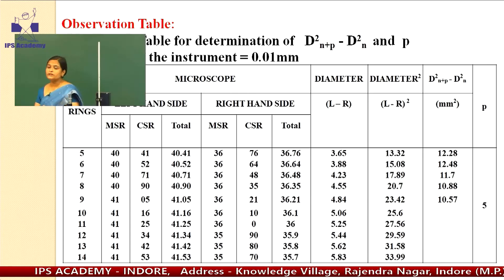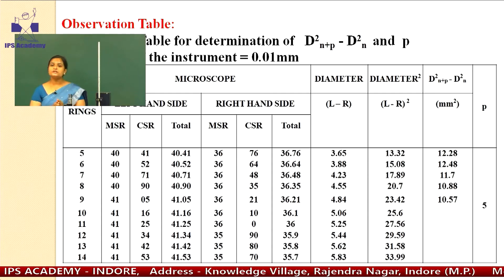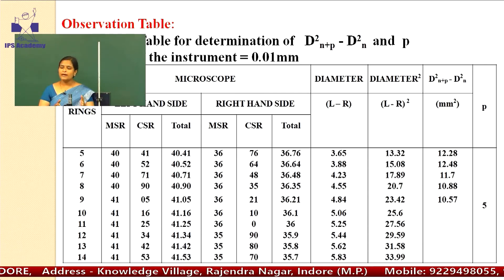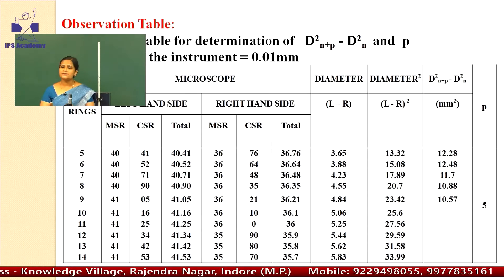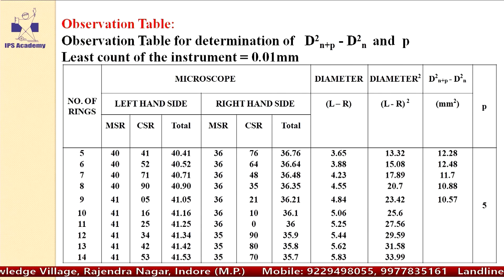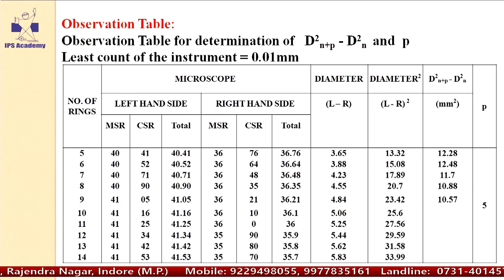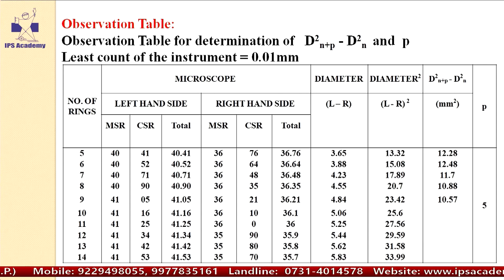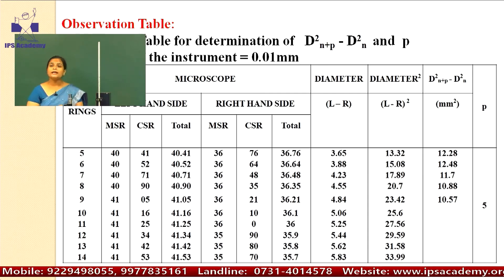How to calculate the diameter of the ring? We use the left hand side reading and right hand side reading. We take the fifth ring value on the left hand side and the fifth ring value on the right hand side. Subtracting these two total values gives you the diameter of the ring. We have calculated the diameter as 3.65 for the fifth ring. So L minus R gives you the diameter of the ring.